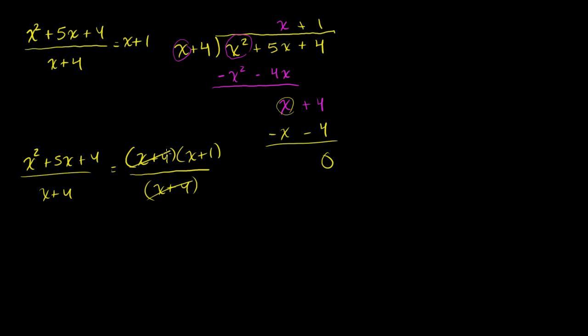And there's another way you could have done this: we could have factored the numerator x squared plus 5x plus 4 as x plus 4 times x plus 1, since 4 times 1 is 4 and 4 plus 1 is 5. All of that over x plus 4 — the x plus 4 cancels out, and you're left with just x plus 1. Either way would have worked. But the algebraic long division will always work, even if you can't cancel out factors like that, even if you did have a remainder.